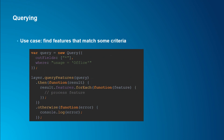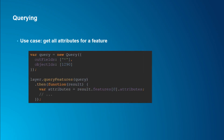To get attributes for a specific known feature, add an objectIds array to the query object with the object ID you want, set outFields to '*', and call queryFeatures. You'll get back the single feature with all its stored attributes. Note: capabilities remain constant for a published dataset, so you only need to check them during development — not at application runtime.